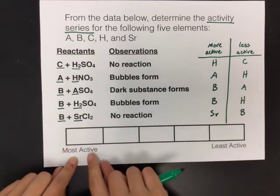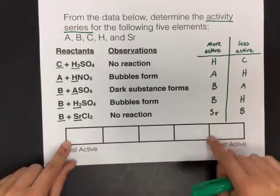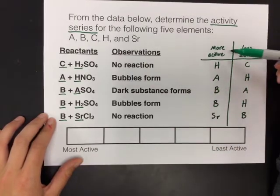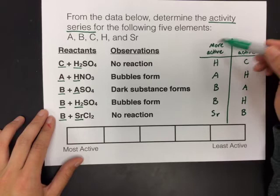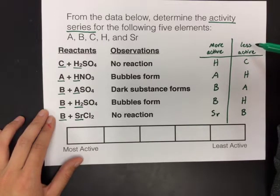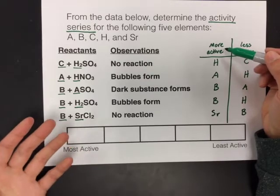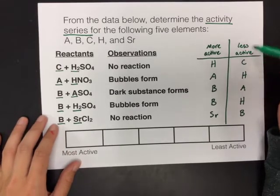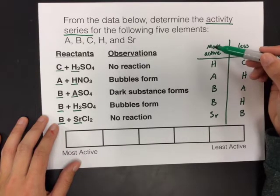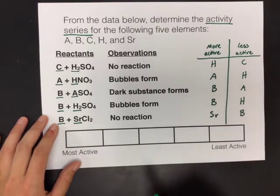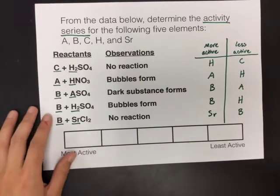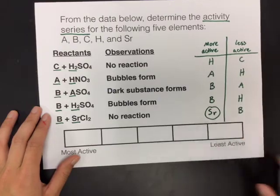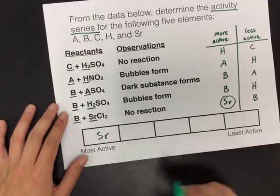I usually start by trying to figure out the most active and then work my way down. And the easiest way to do that is to look in your more active column or look at both columns, but try to find an element that was only in the more active column and never in the less active column. Because if it only shows up in the more active column, it means that it was never beaten. And that's the definition of most active. If it shows up over here, that means someone was able to beat it. So you're looking for one that's only in this column, never in this column. Do you see it? Hopefully you see it. Sr never appears in this column. So from that information, we can say that Sr is the most active element.